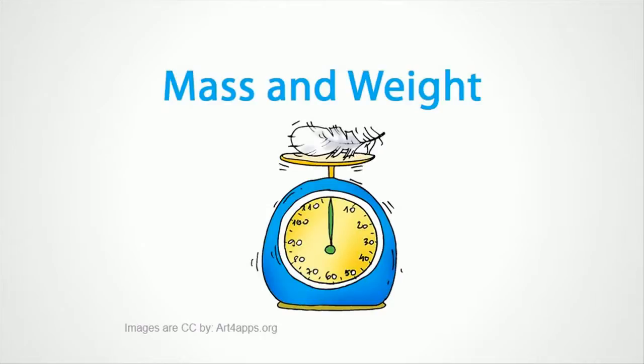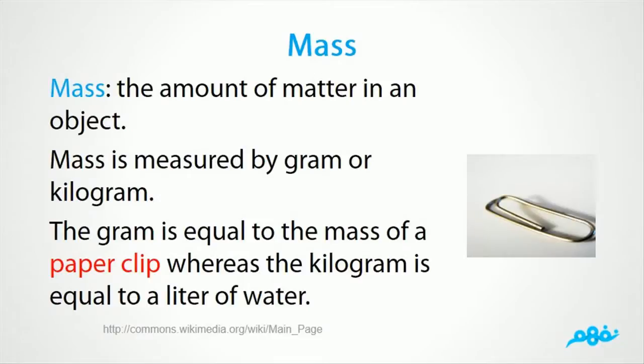Let's start to know mass. Mass is the amount of matter in an object. Mass is measured by gram or kilogram. The gram is equal to the mass of a paperclip, whereas the kilogram is equal to a liter of water.